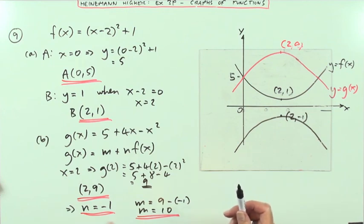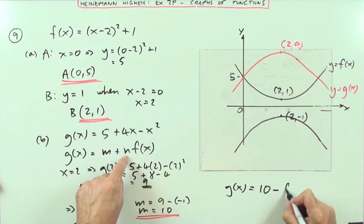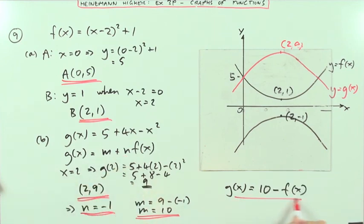It asks for the values of m and n, so that would do, or you could write it out again, g(x) equals 10 minus f(x). Now that's question 9.